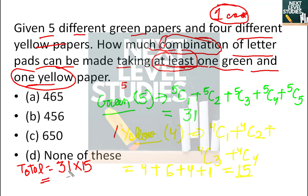So 31 into 15 - let me break this down. 15 is 10 plus 5. So 31 into 10 equals 310, plus 31 into 5, which is half of 310, equals 155. Together that's 465. So 465 ways, and the answer is option A.